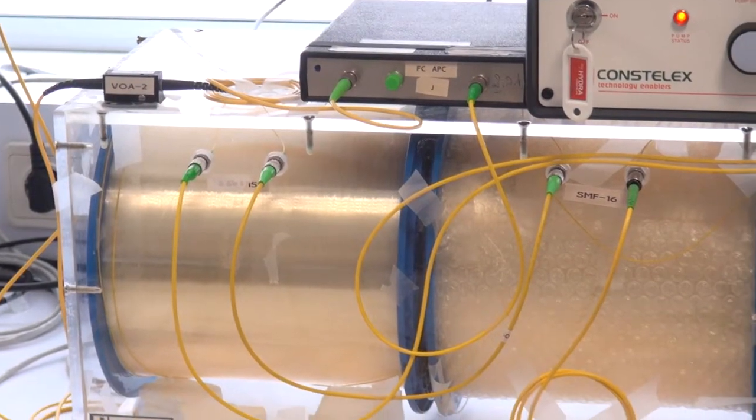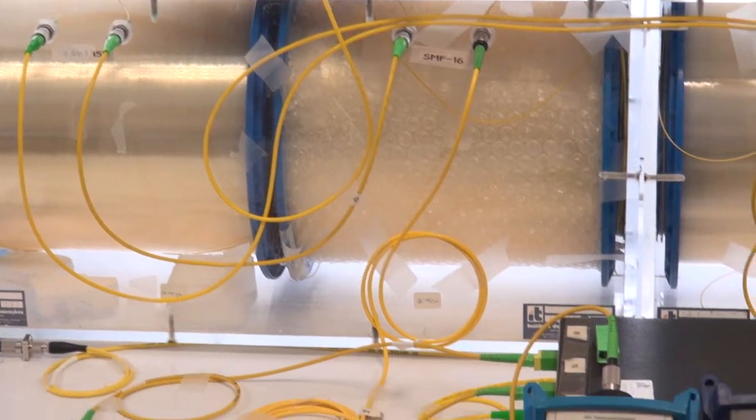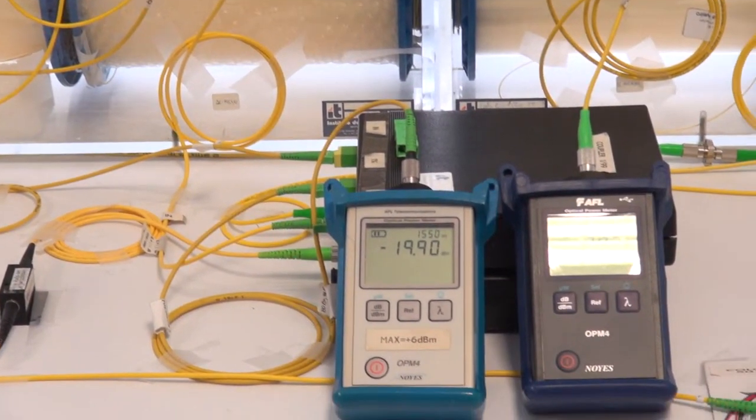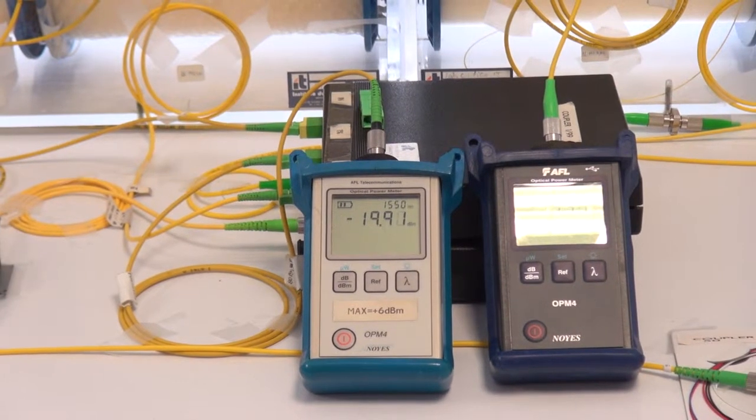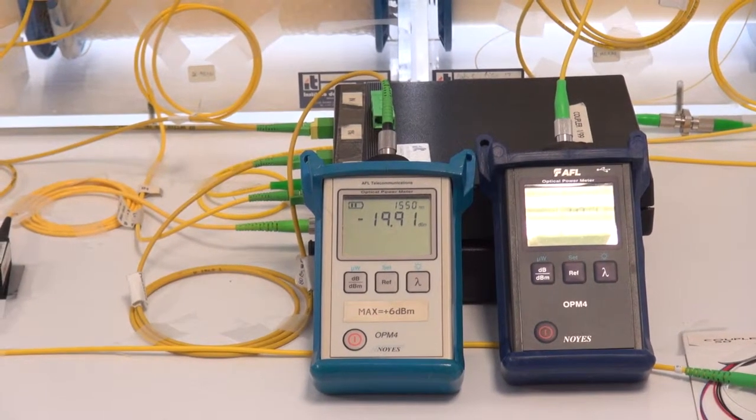We use two power meters in order to adjust the entrance power of each span of fiber. And after each span, we need EDFA to compensate loss of each span.